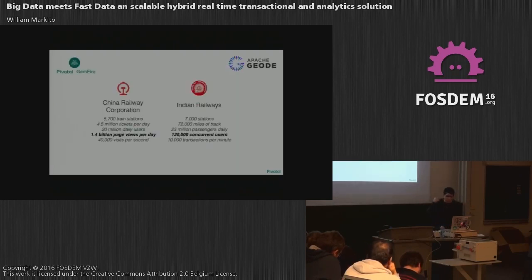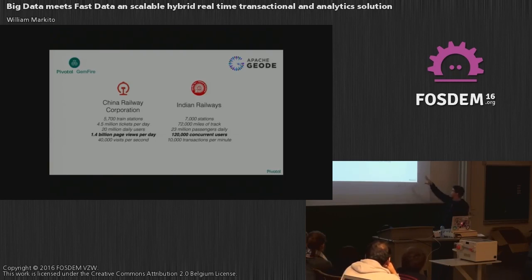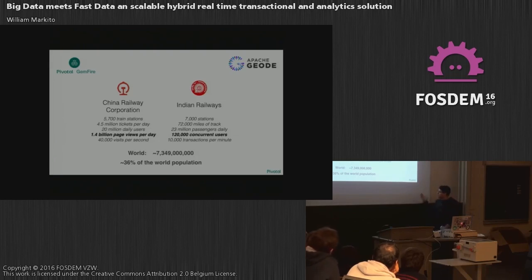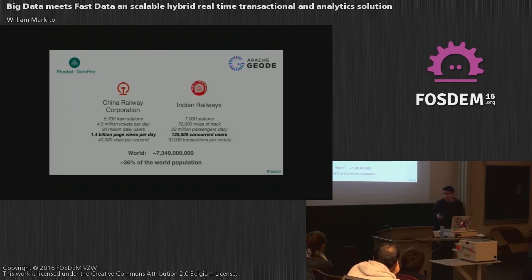To put that in perspective with some numbers, here are two use cases — China Rail and India Rail — still using Pivotal GemFire, but Pivotal GemFire was entirely donated as Apache Geode, so it's the same code base and works the same way. If you combine the numbers by population, we like to joke internally that we're kind of responsible for 36% of the world population's public transportation in a way. People may not know about GemFire or Geode, and that was one of the things that triggered the idea of sharing the code and making it open source.